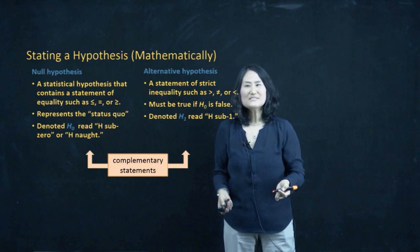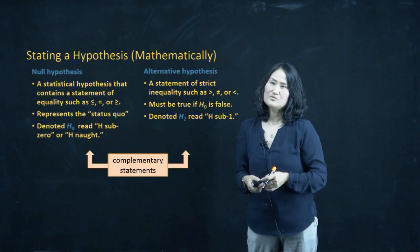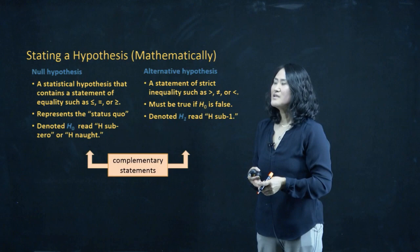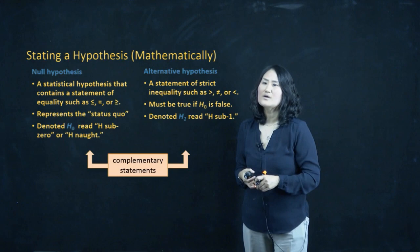Hello everyone, this is a lecture for how to do hypothesis testing. In the beginning, we're going to work on how to mathematically write hypotheses. There are two different hypotheses that you have to write: one is a null hypothesis and the other one is the alternative. They always come as a complementary pair. Based on your claim, you write your hypothesis first and then figure out which is H0 and H1, and then write the complementary form.